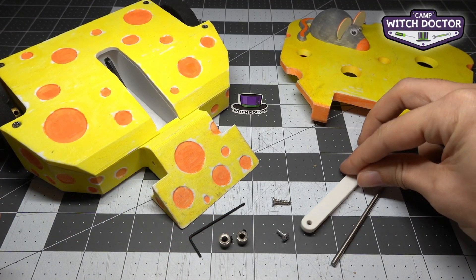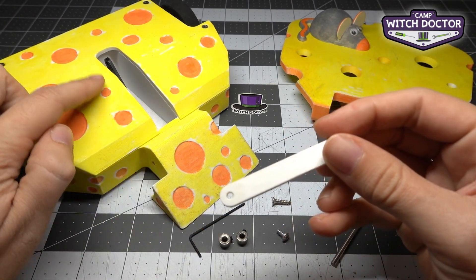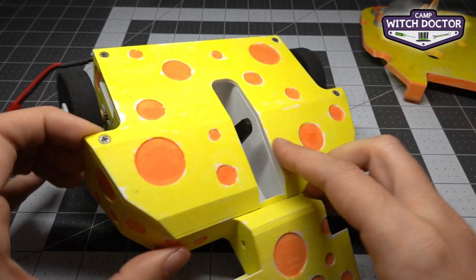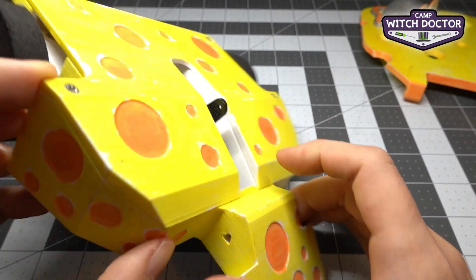Next we're going to take the flipper linkage and attach it to your servo. Take the servo horn and use your finger to push it forward like this. You want to be able to access that screw from the side like that.